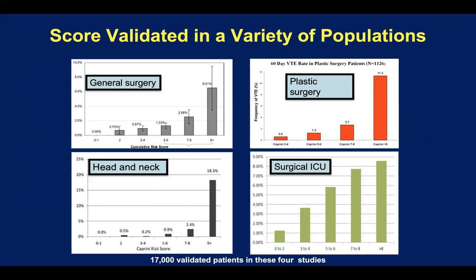Studies have identified a very high-risk score for VTE that varies according to the surgical population — it's not five anymore. In general surgery you can see the results already shown. In head and neck surgery, a score of five has a very low incidence of DVT, less than 1%. In plastic surgery, a score of five is around 1%, but if the score is over eight, it goes to 11% at 60 days. Critically, in head and neck surgery, although the incidence is low at score five, if the score goes over nine, it reaches 18% of patients. This is critical information for those caring for patients in these specialties to know where the set point between high and very high risk is.